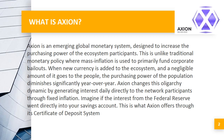This is unlike traditional monetary policy where mass inflation is used to primarily fund corporate bailouts. When new currency is added to the ecosystem, the amount that goes to the people is negligible, and the purchasing power of the population diminishes significantly year over year. Axion changes this oligarchy dynamic by generating interest daily directly to the network participants through fixed inflation.